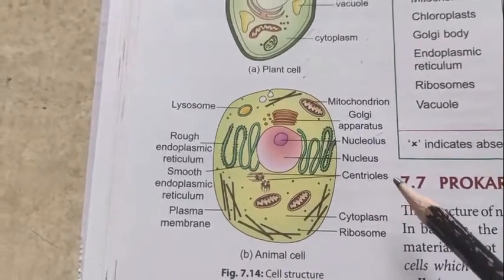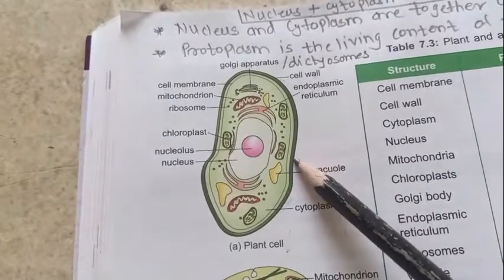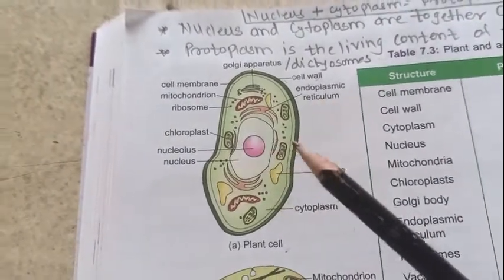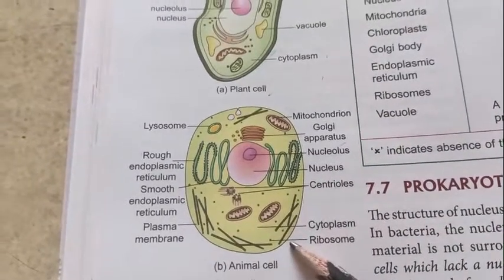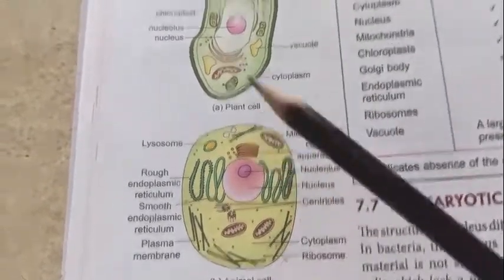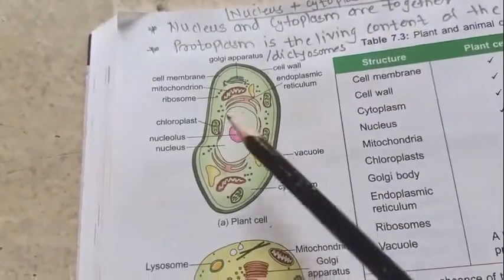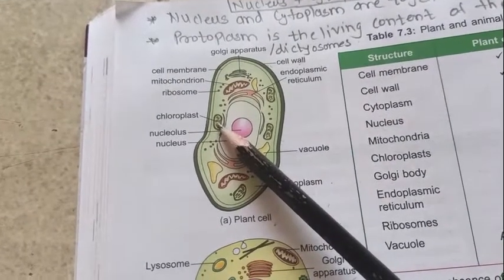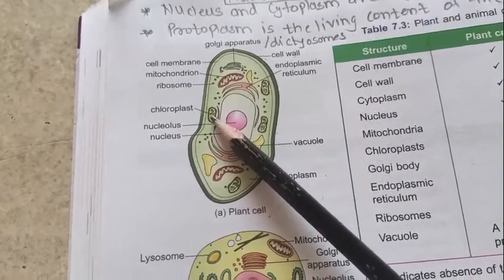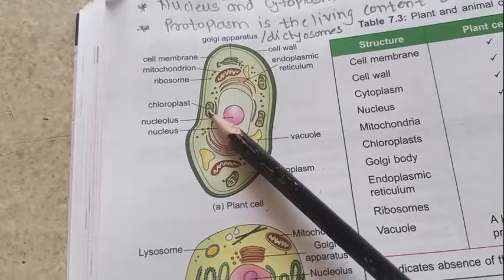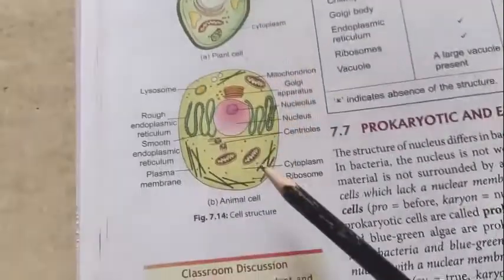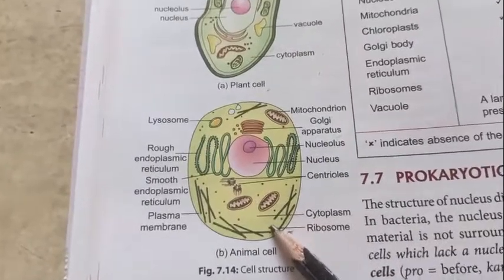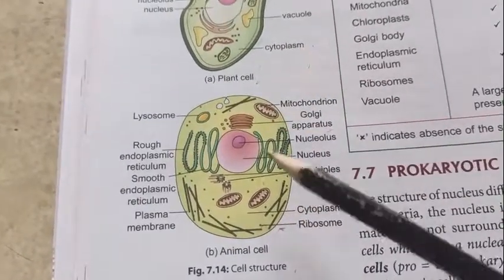Next we will discuss plastids. Plastids are present only in the plant cell but are absent in the animal cell. You can see here the chloroplast, which is the green-colored plastid containing the green pigment called chlorophyll. Plastids are absent in the animal cell.